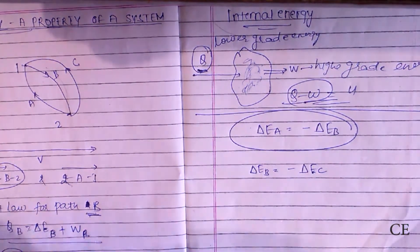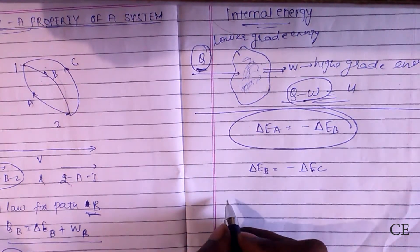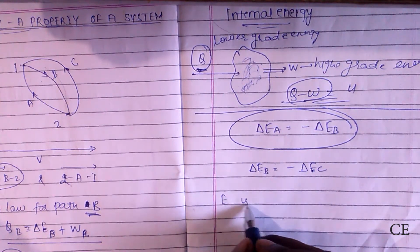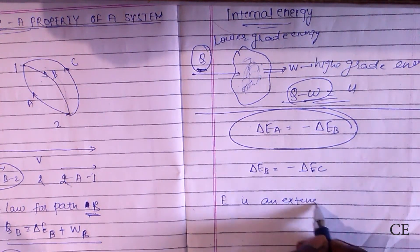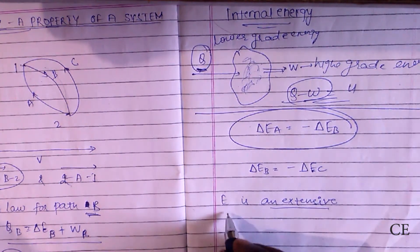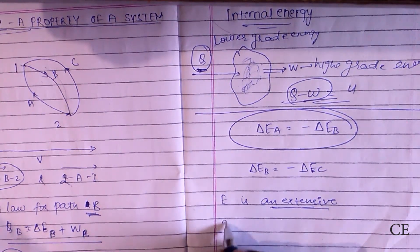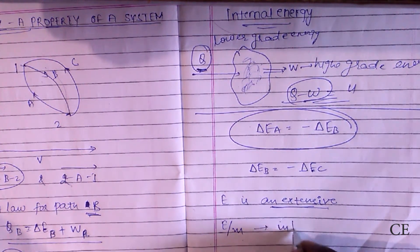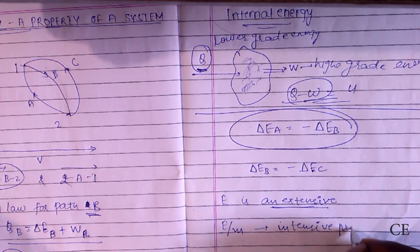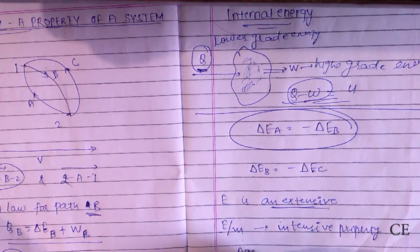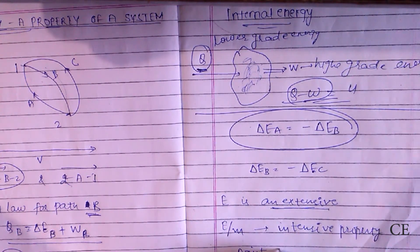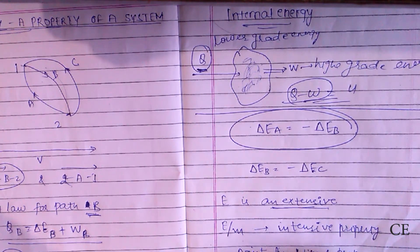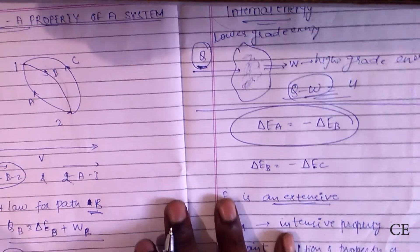Now there are some properties of the energy, internal energy. Energy is basically an extensive property. Extensive property means it is dependent on mass. But when we talk about specific internal energy or specific energy, then it would be an intensive property, and it is a point function or state function, a state variable, and it is a property of the system.